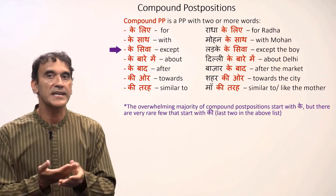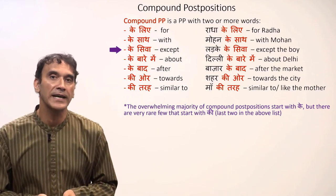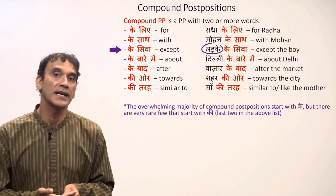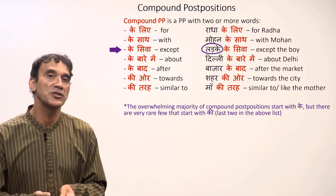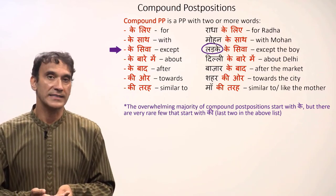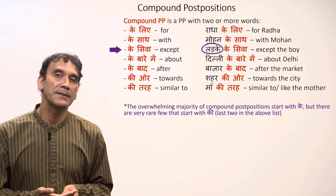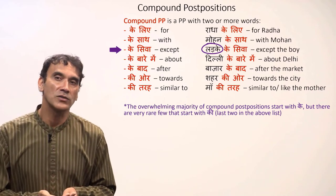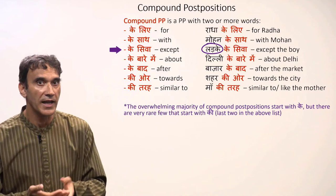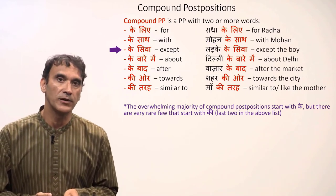Since these are postpositions, the noun before them will decline or change. So ladka in the last example changes to ladke — ladke ke siwa, 'except the boy.' The a-ending masculine nouns change to e: ladka changes to ladke — ladke ke siwa, 'except the boy.'